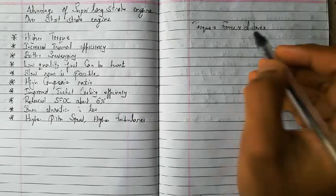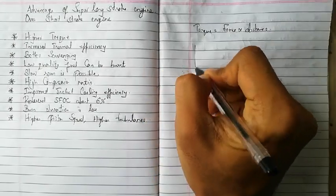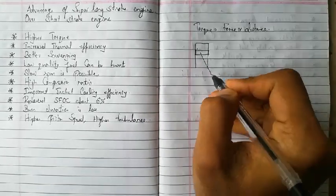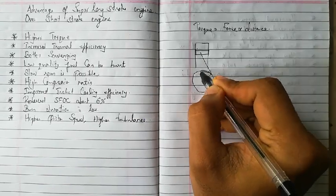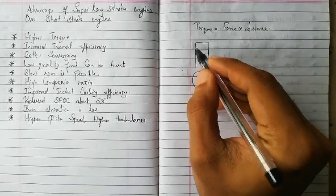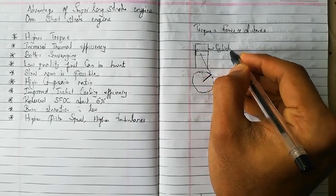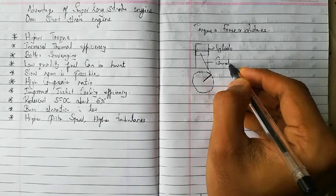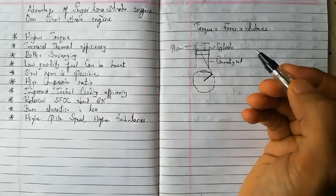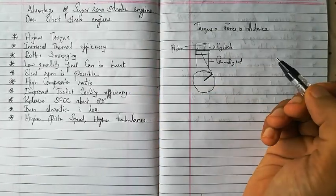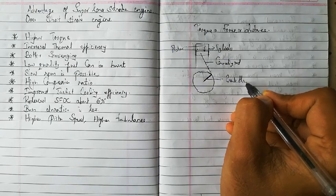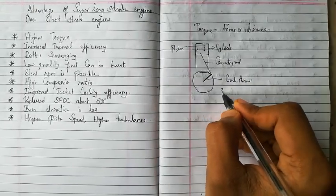In super long stroke or long stroke engines, what we are doing is increasing this distance. Here is an engine diagram: this is the crank, this is the connecting rod, this is the piston, and this is the cylinder. There is a relation here — this is the crank throw, also called the crank web.